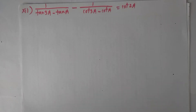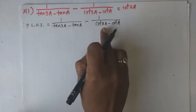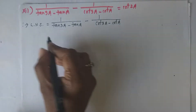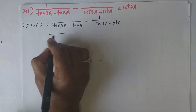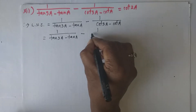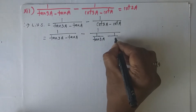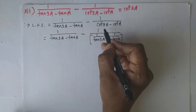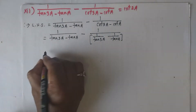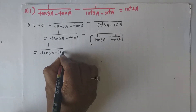Next problem: prove 1/(tan3a - tana) - 1/(cot3a - cota) = cot2a. Write down the left hand side as it is. I will convert cot into tan: cot3a = 1/tan3a and cota = 1/tana. Keep the first term as is, and for the second term, take LCM in the denominator to get (tana - tan3a)/(tan3a · tana).